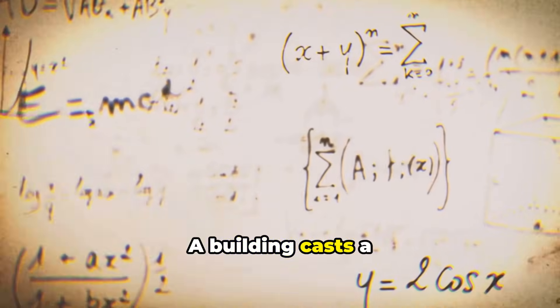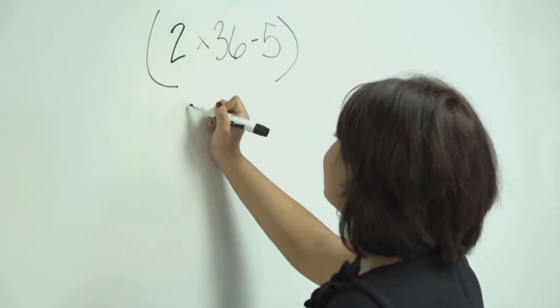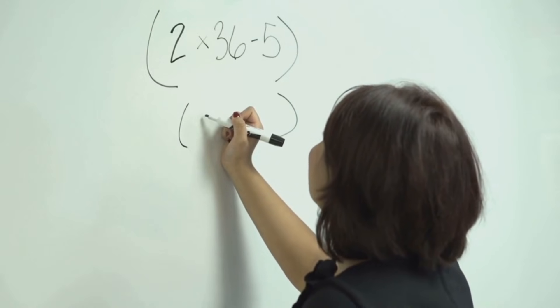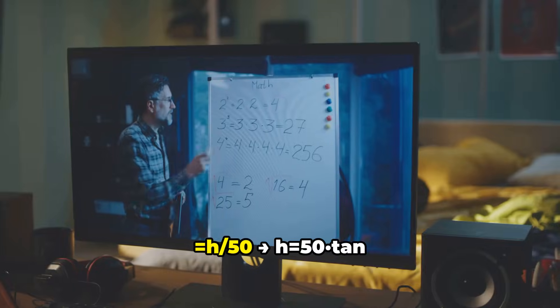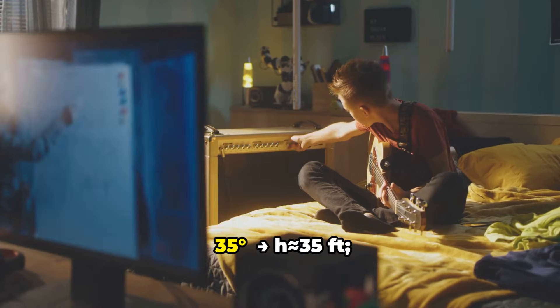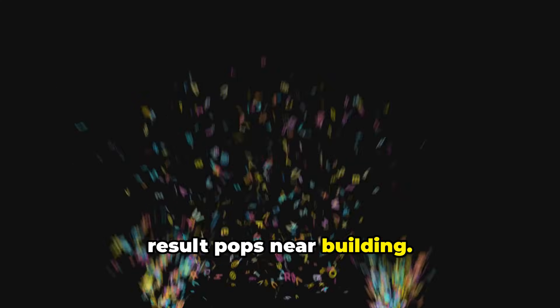A building casts a 50-foot shadow while the angle of elevation from the tip of the shadow to the top of the building is 35 degrees. Use tangent to find the building's height. Setting up the equation: tan(35°) = H / 50, so H = 50 × tan(35°), which gives us approximately 35 feet.